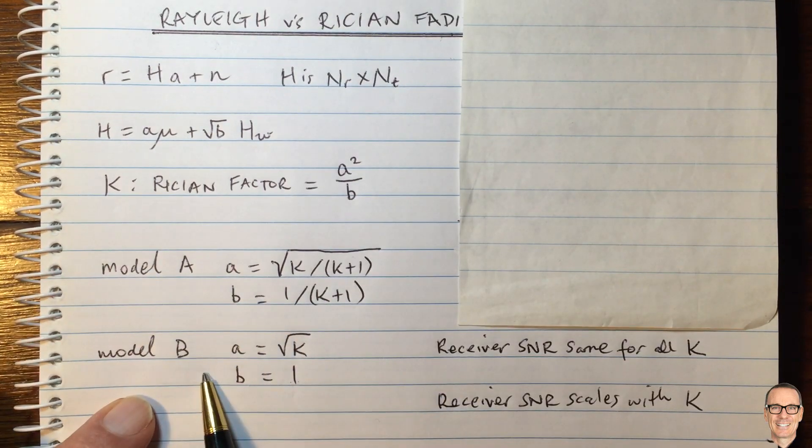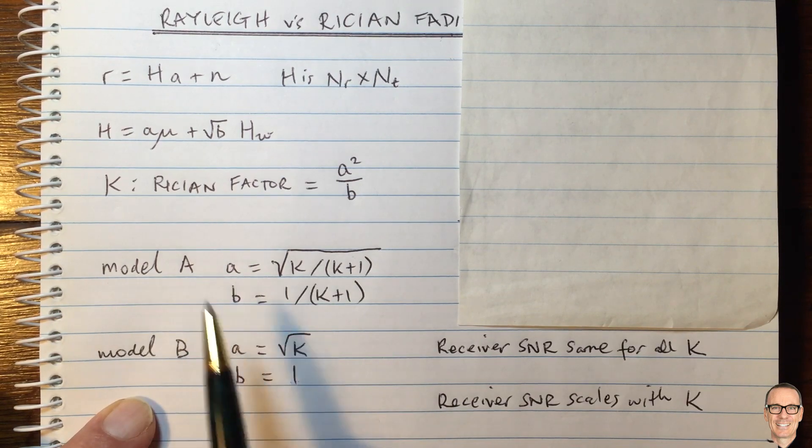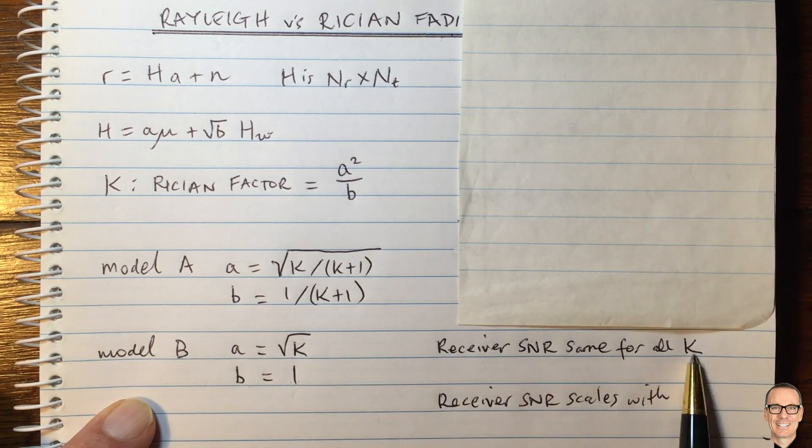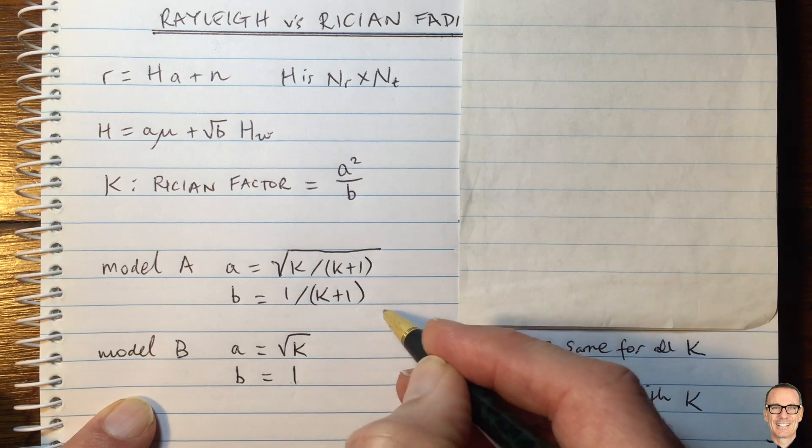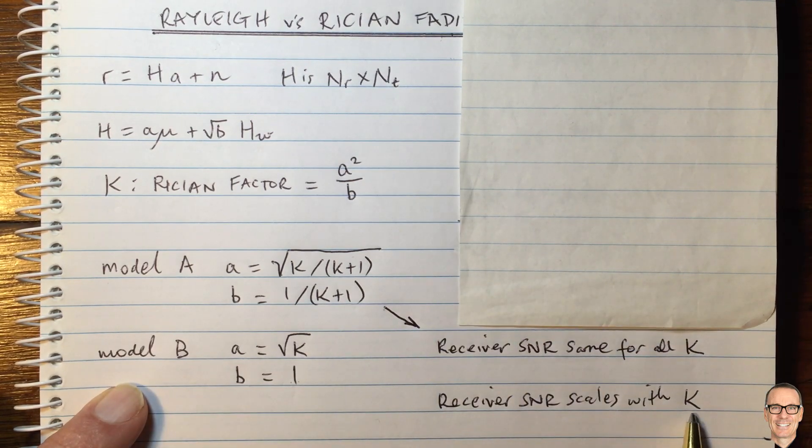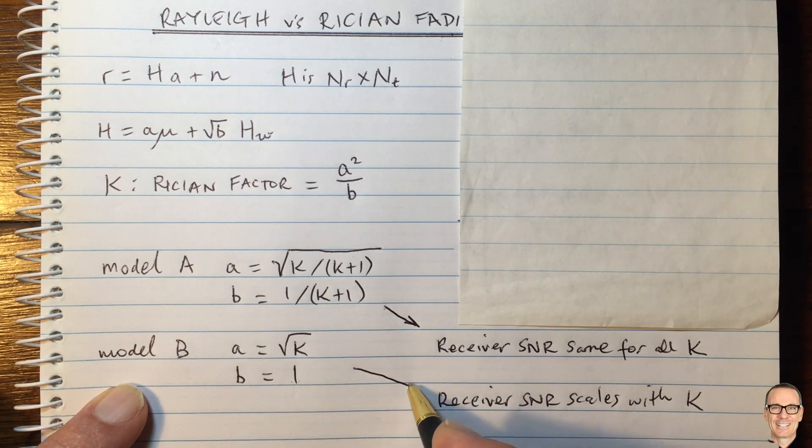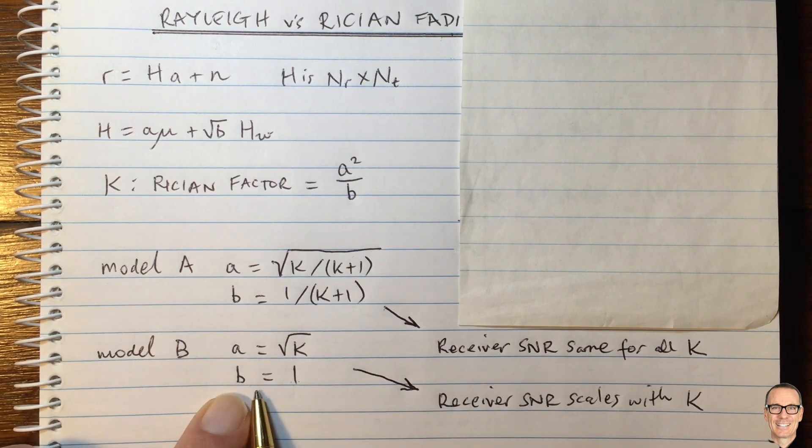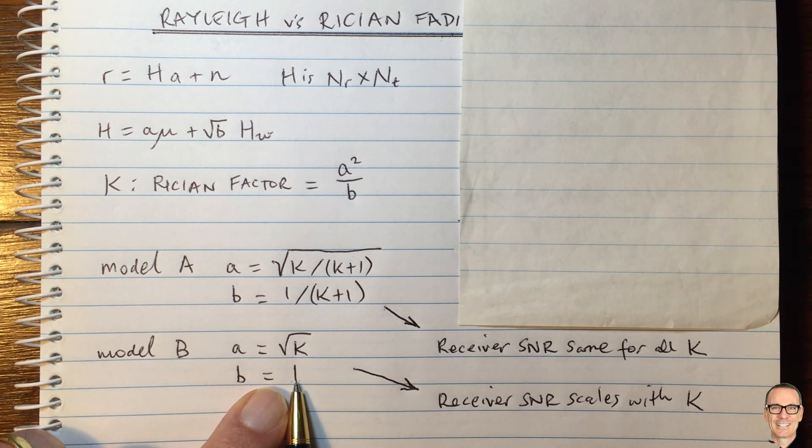And what we can see, the key differences between these two models is that for model A, the receiver SNR is the same for all values of K, whereas for model B, the receiver SNR scales with the value of K. And that's because we're holding B constant in this model.